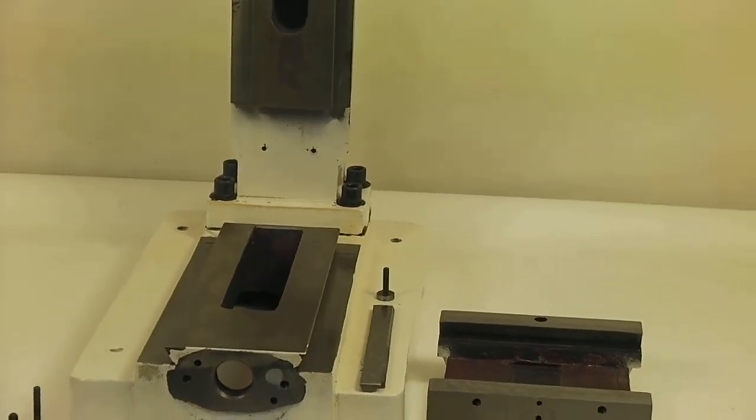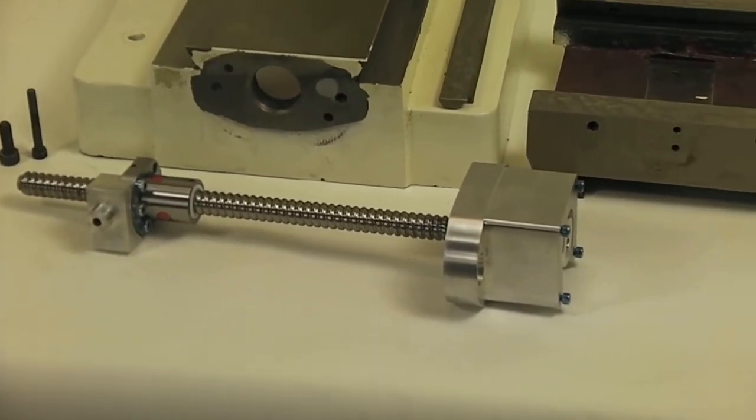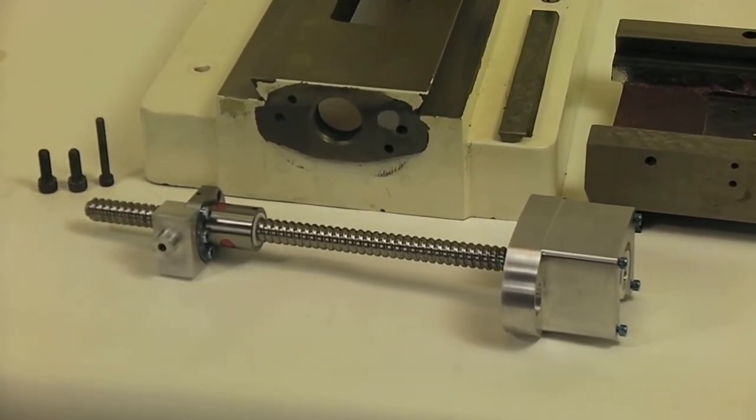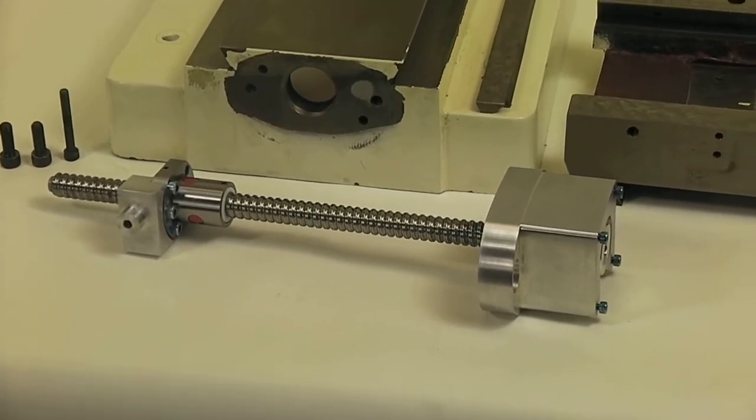This is an install video for the Y mount for the Precision Matthews PM25 milling machine with the Arizona CNC ball screw kit. That's the Y mount right there.